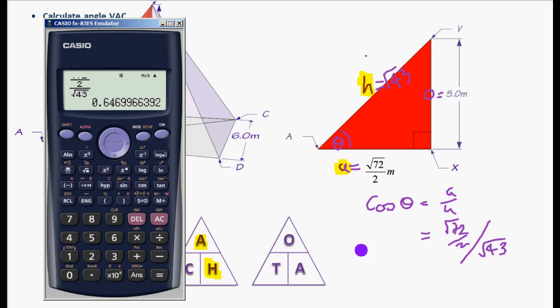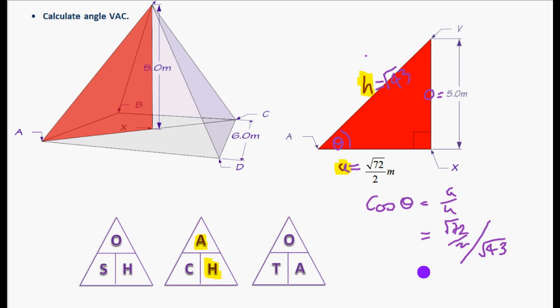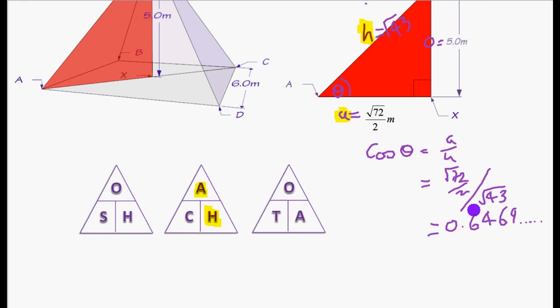Which is 0.644. Not 0.644. It is in fact 0.6469. And you don't round at this stage. You mustn't round at this stage. So just giving ourselves a bit more working space.